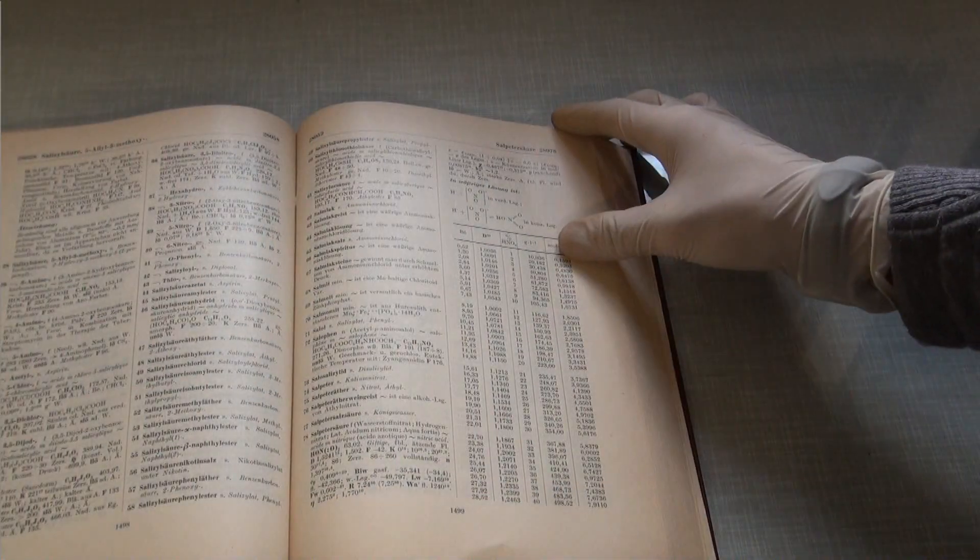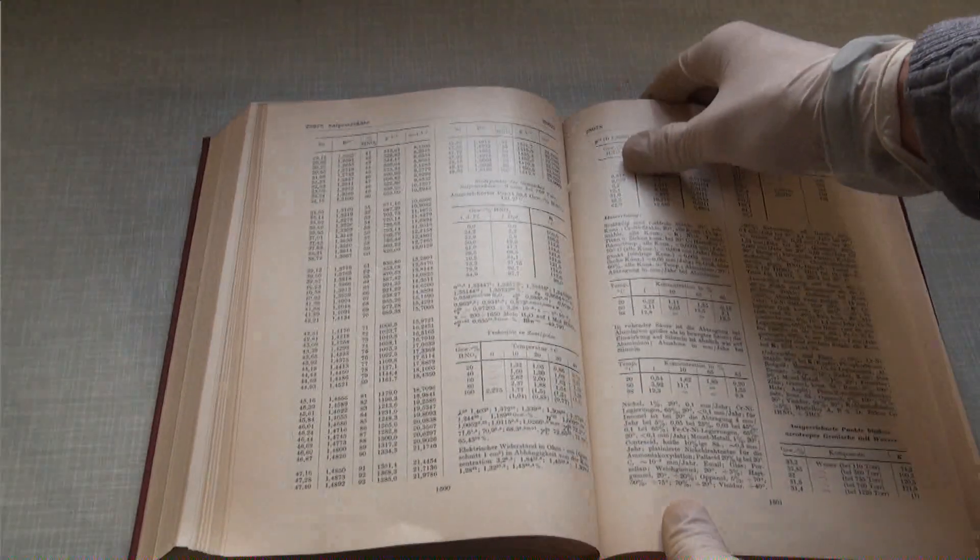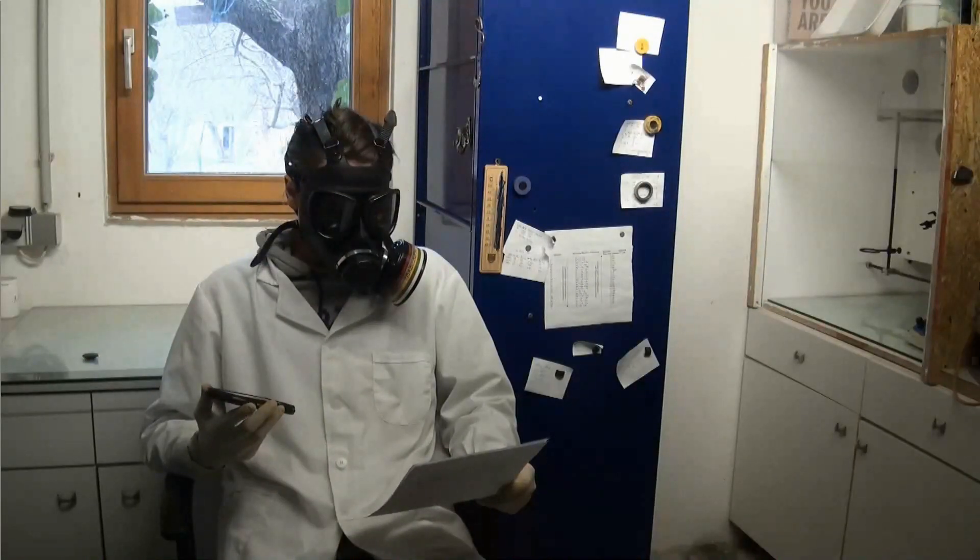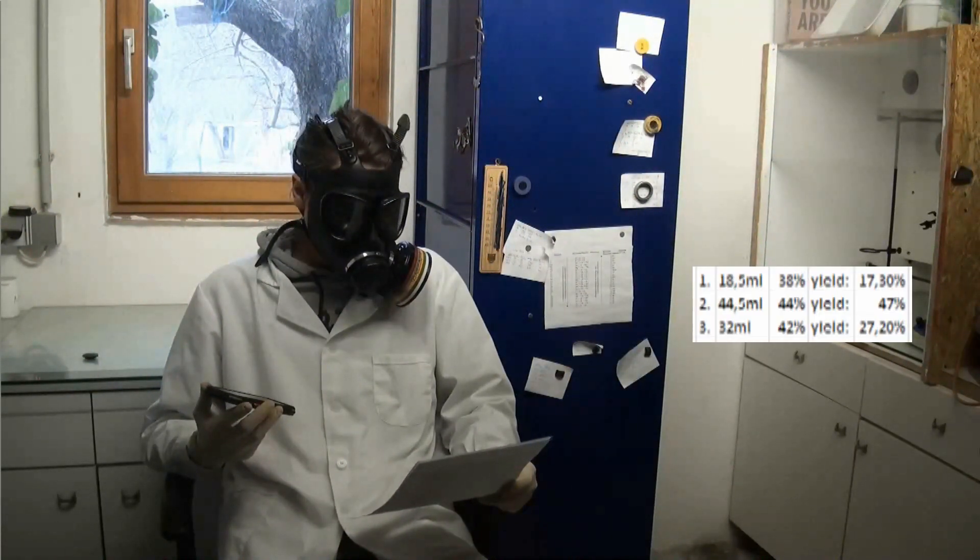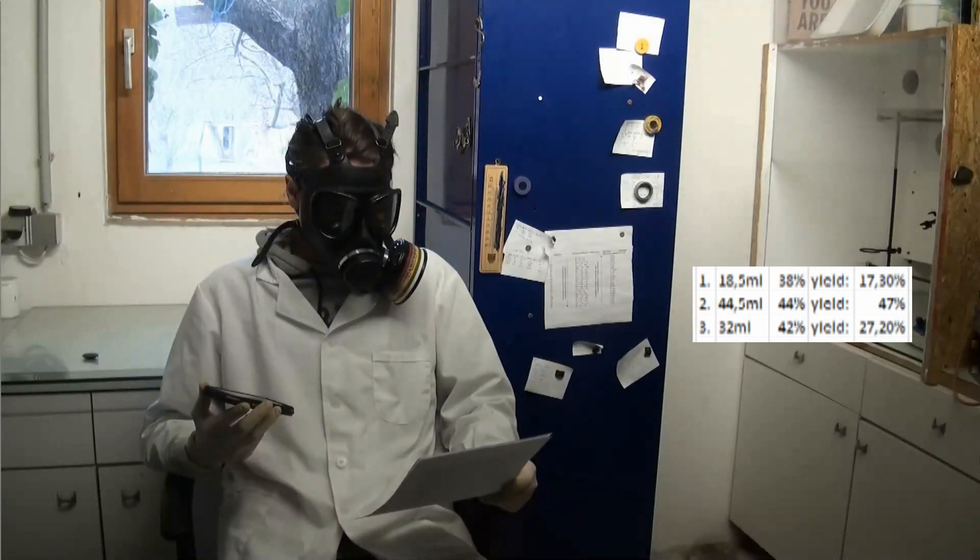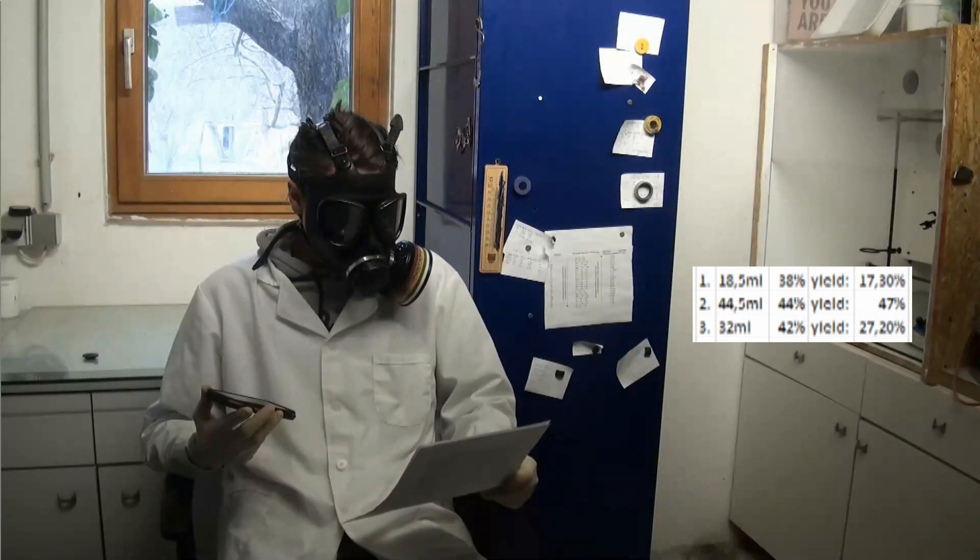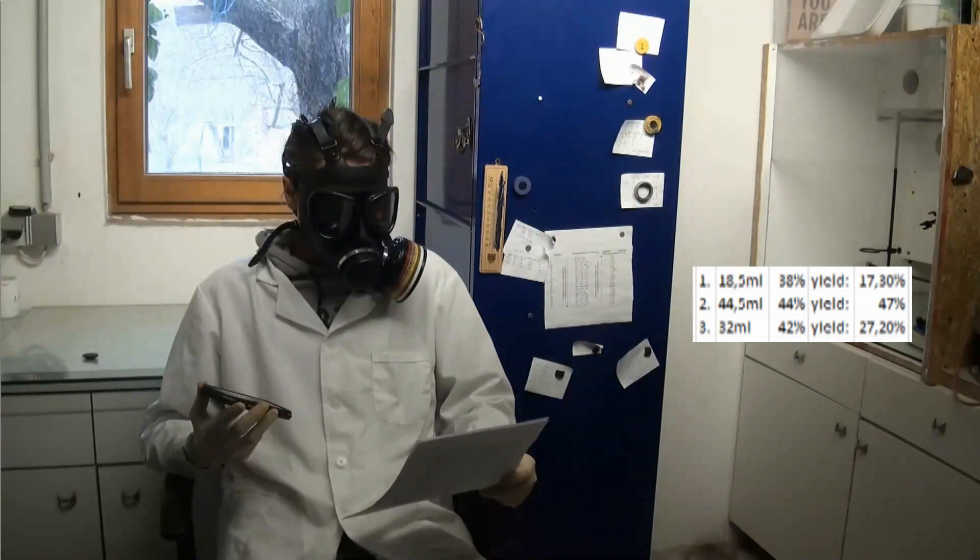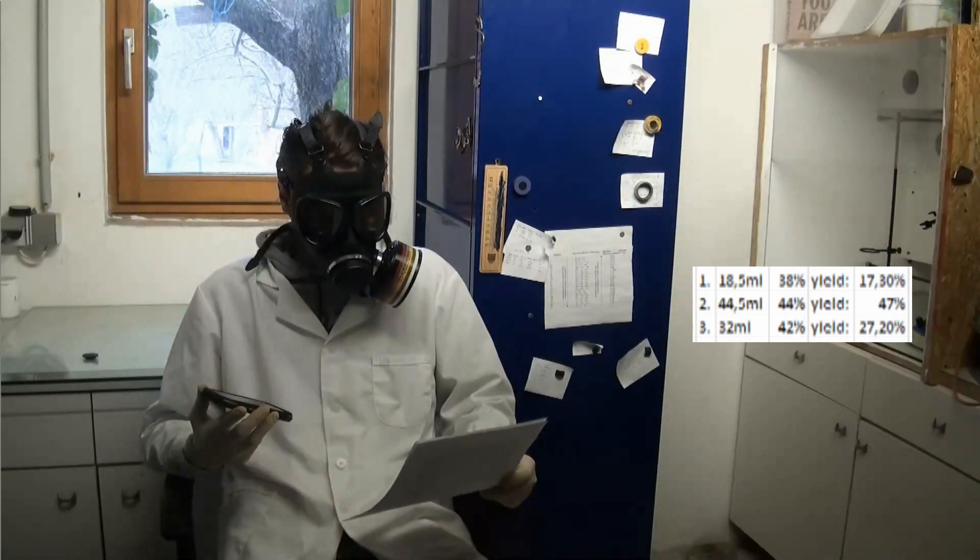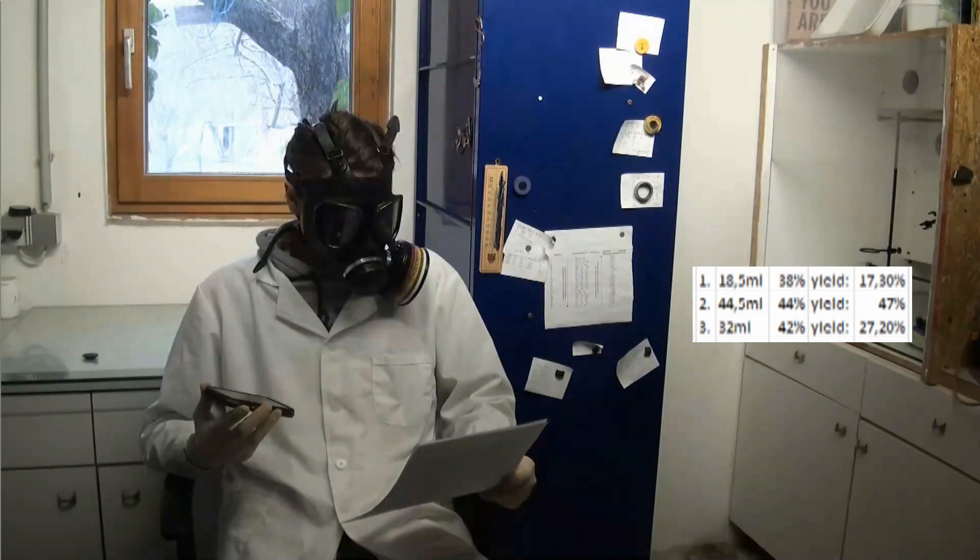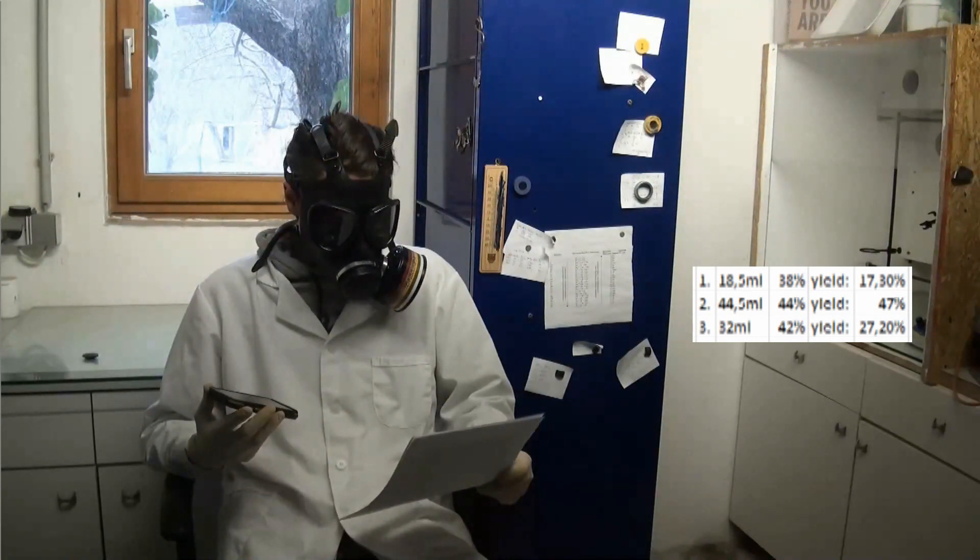For example, a density table from which I was able to find out that the first distillation gave me 18.5 milliliters of 38% nitric acid, which corresponds to a yield of 17.3%. And the second one gave me 44.5 milliliters of 44% nitric acid, which corresponds to a yield of 47%.